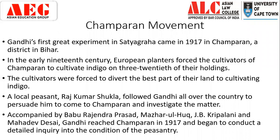A local leader by the name of Rajkumar Shukla followed Gandhi all over the country. He came to Lucknow and persuaded Gandhi to come to Champaran and investigate the situation, asking him to come see what was happening and decide on the next course of action. By this time Gandhi had already started gaining a foothold in politics. People like Rajendra Prasad, Mazaharul Haq, J.B. Kripalani, and Mahadev Desai — close associates of Gandhi — all reached Champaran in 1917 and started looking into the matter of indigo plantation and the condition of the cultivators.